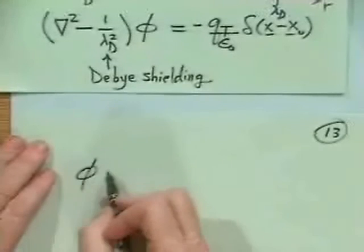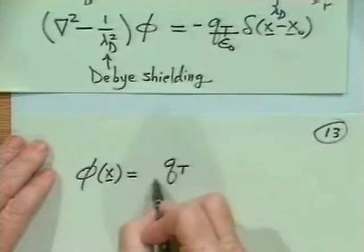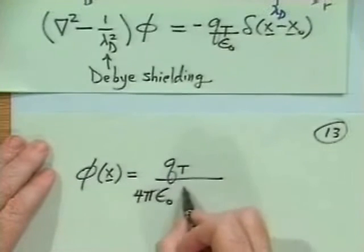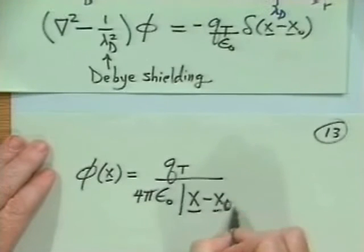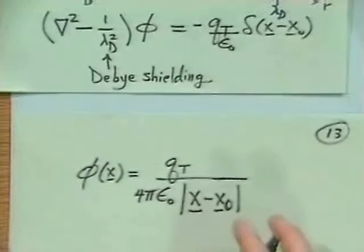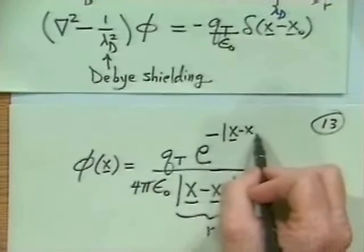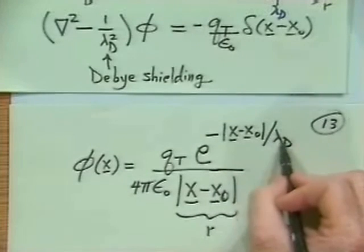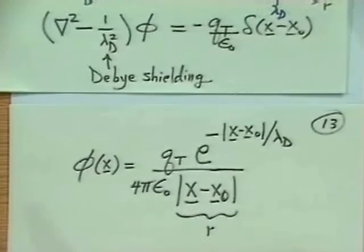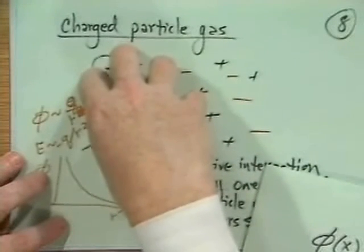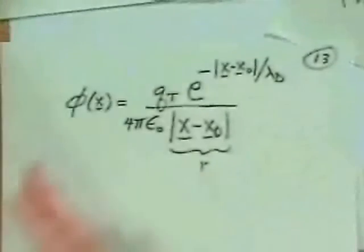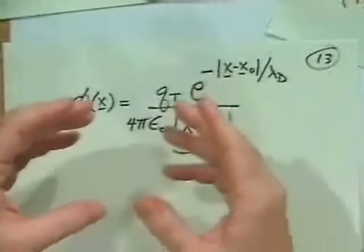I'll finish by just writing down the formal solution of the equation. Namely, you'll find that φ(X) is given by Q_test/(4πε₀|X-X₀|) times e^(-|X-X₀|/λ_D). So the distance away—this is just the Coulomb potential, call that R. And then there's e^(-R/λ_D). So what happens is that these interactions take place not between individual particles, but they do so within some distance called the Debye length. And then they don't interact over longer distances because all the rest of the particles collectively move or are polarized and cause a Debye shielding on distances long compared to the Debye length.